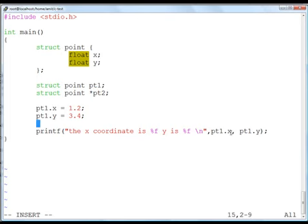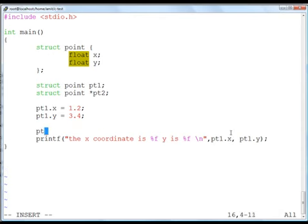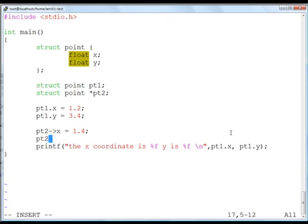If I go ahead and simply write pt2 - by the way remember while defining or while accessing the members of a pointer to the structure, I cannot use dot operator but I have to use this arrow operator or caret operator. If I want to save say pt2 arrow x equal to 1.4, this is perfectly valid. pt2 arrow y equal to 33.6, this is again completely valid.